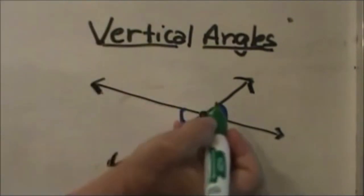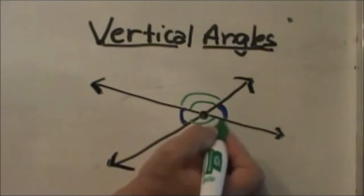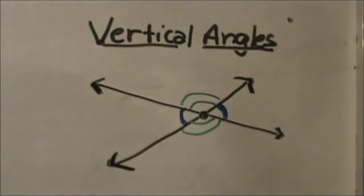Then I'm going to mark these other angles congruent in green with two arcs and they're across from each other. These are what vertical angles are.